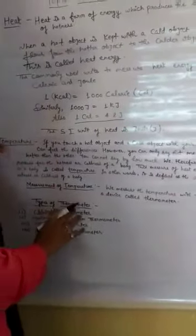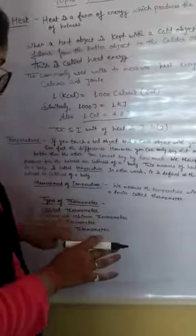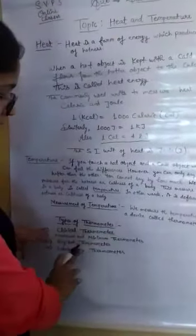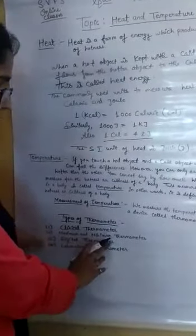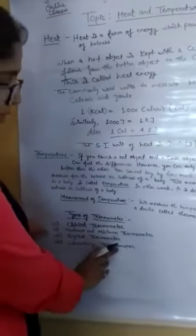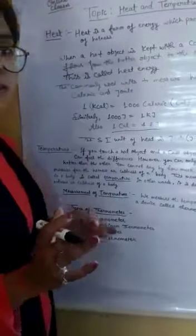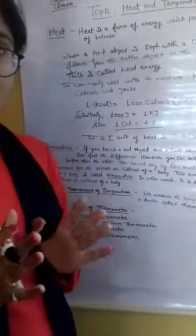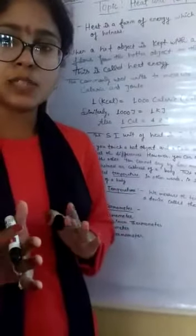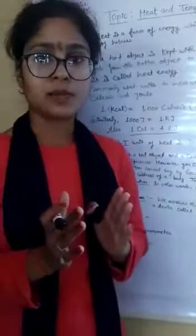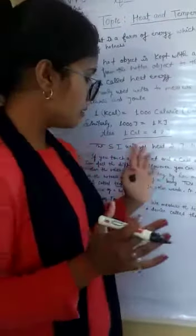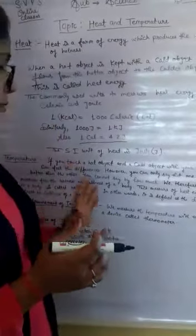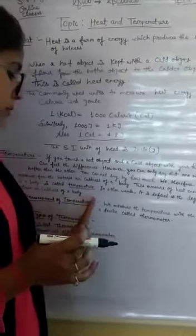Types of thermometer: There are four types of thermometer. First one is clinical thermometer, second one is maximum and minimum thermometer, third one is digital thermometer, and fourth one is laboratory thermometer. So students, you understood heat, temperature, measurement of temperature, and types of thermometer.